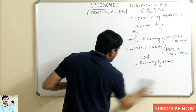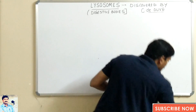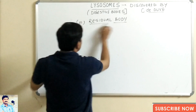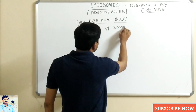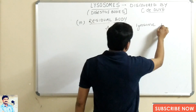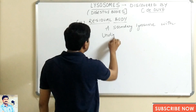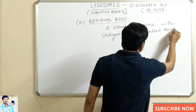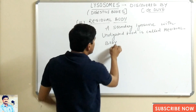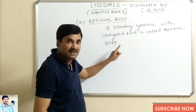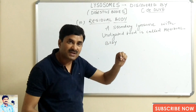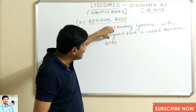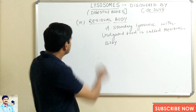The third type is the residual body. A secondary lysosome with undigested food is called a residual body. Not all food is digested; at least some amount remains undigested. The secondary lysosome containing this undigested food is called the residual body.